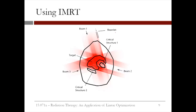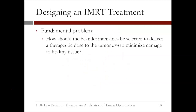Each of the pieces of the beam is referred to as a beamlet. So in IMRT, we decide the intensity of each beamlet so that we can target the tumor with radiation while minimizing the radiation to healthy tissue. The fundamental problem when designing an IMRT treatment is: how should the beamlet intensities be selected to deliver a therapeutic dose to the tumor and to minimize damage to healthy tissue? This is the problem we'll address in this lecture using linear optimization.